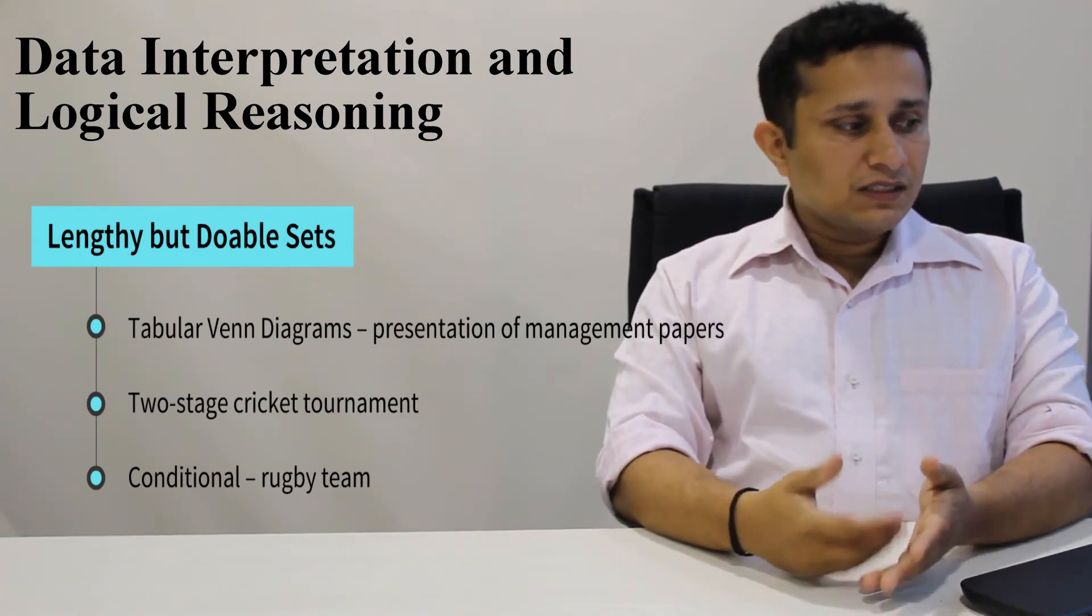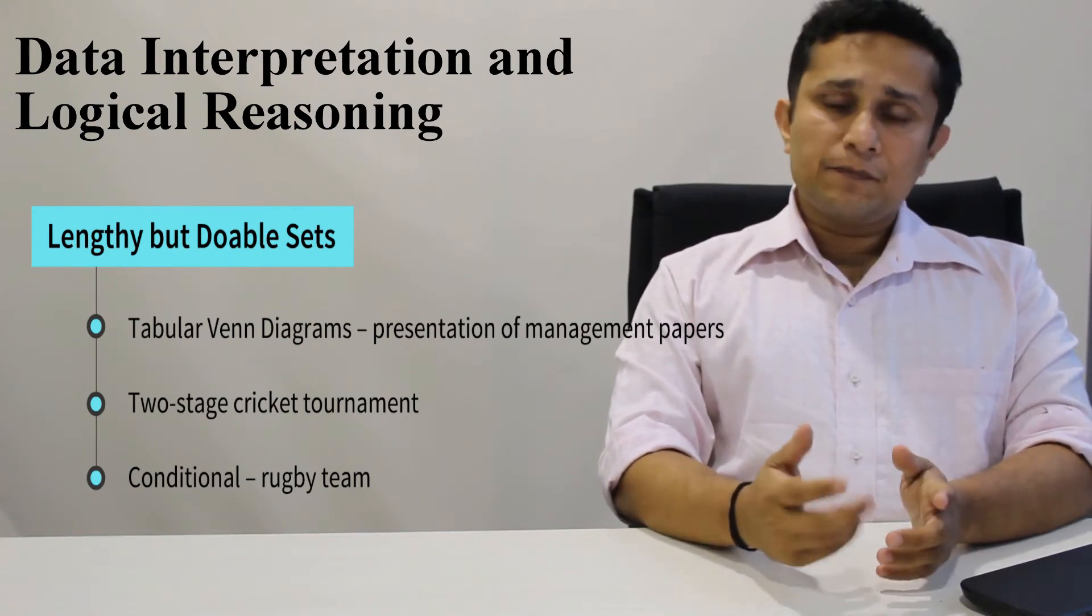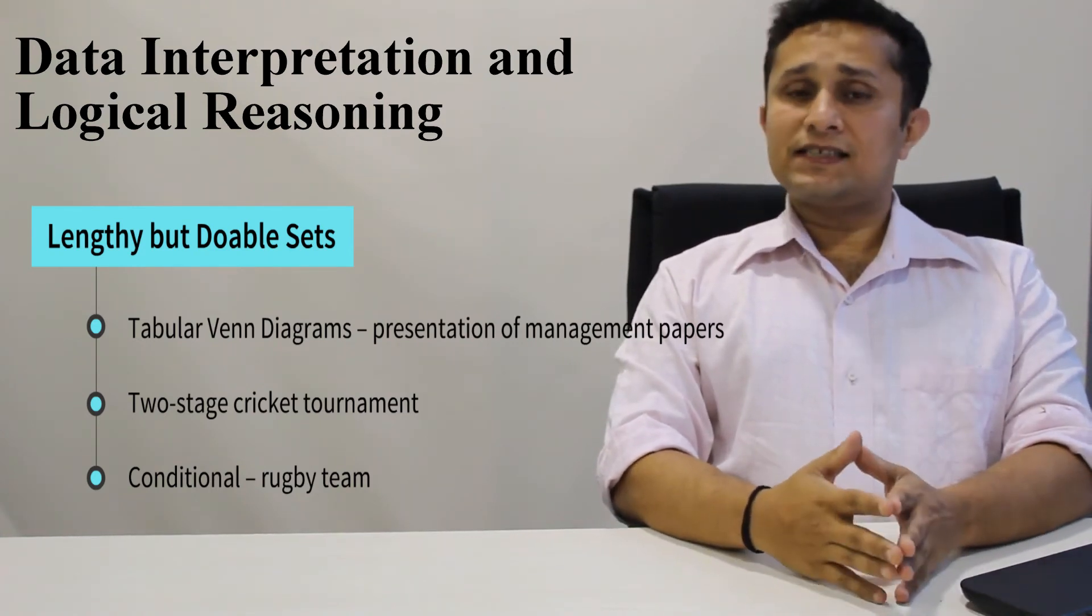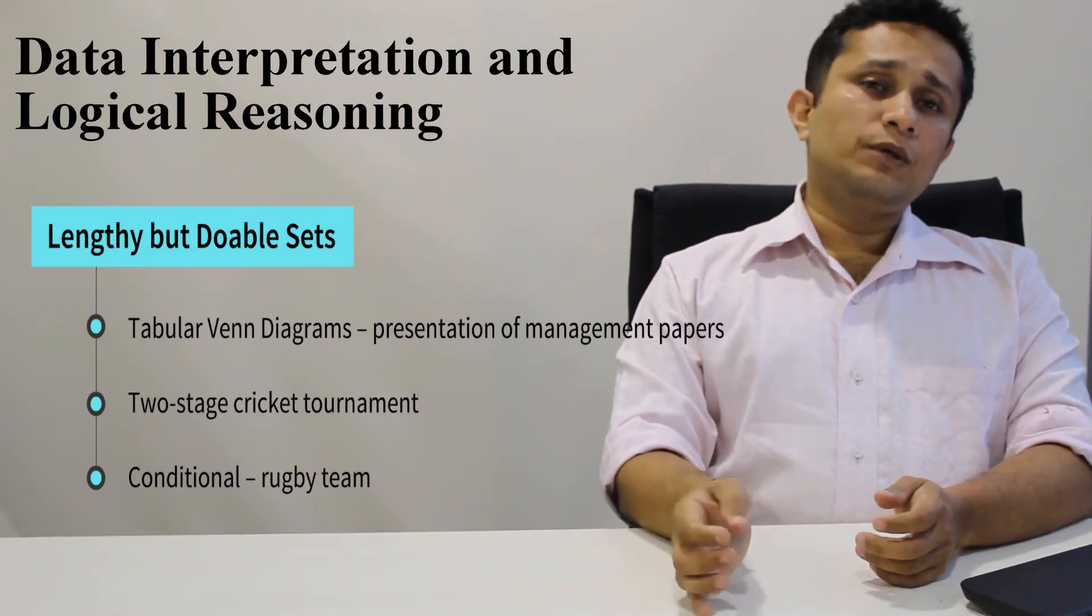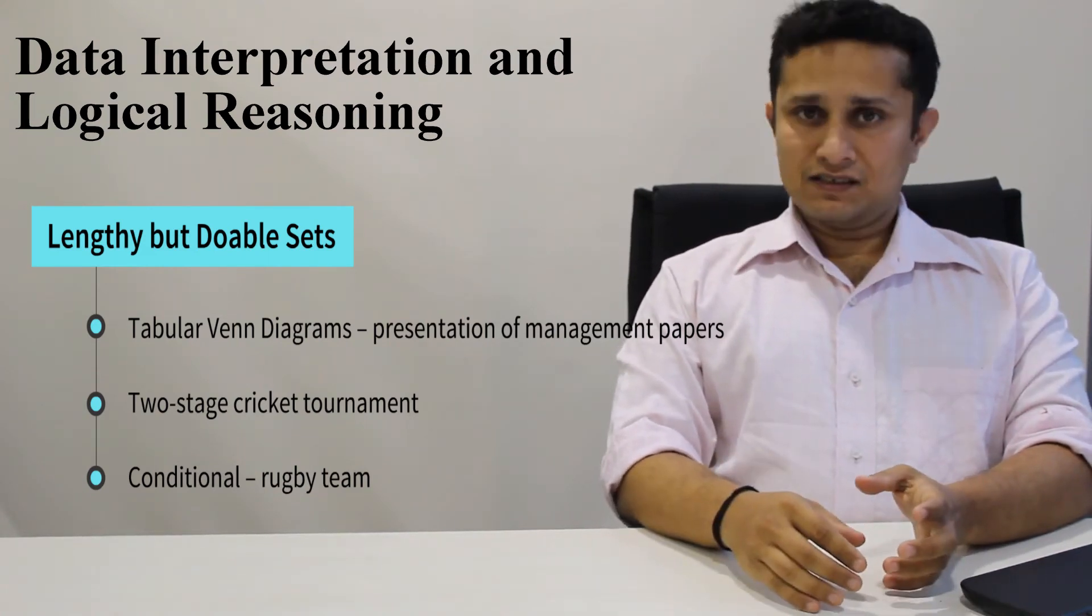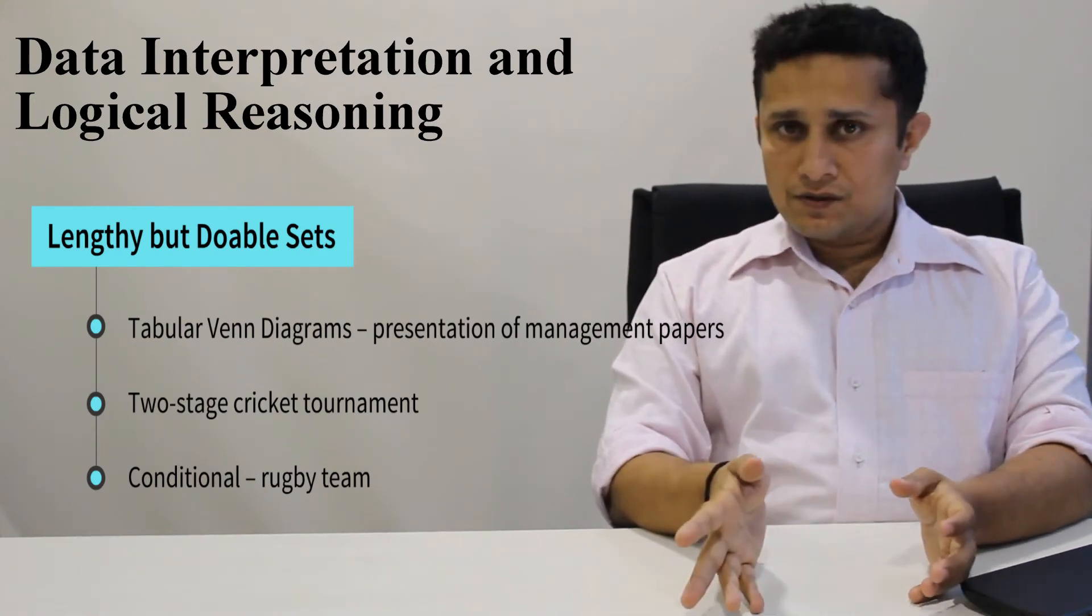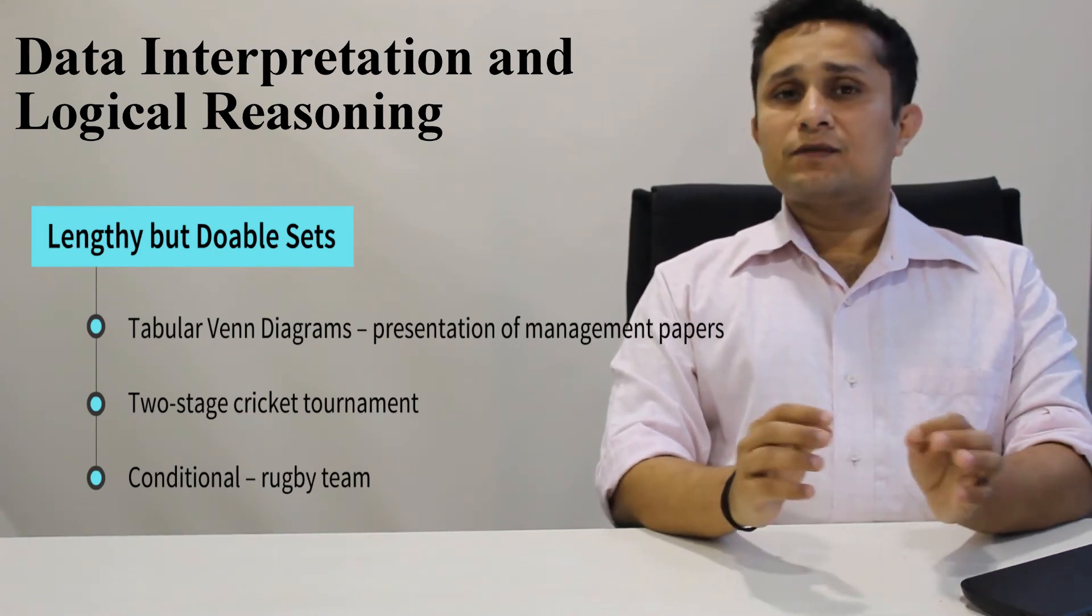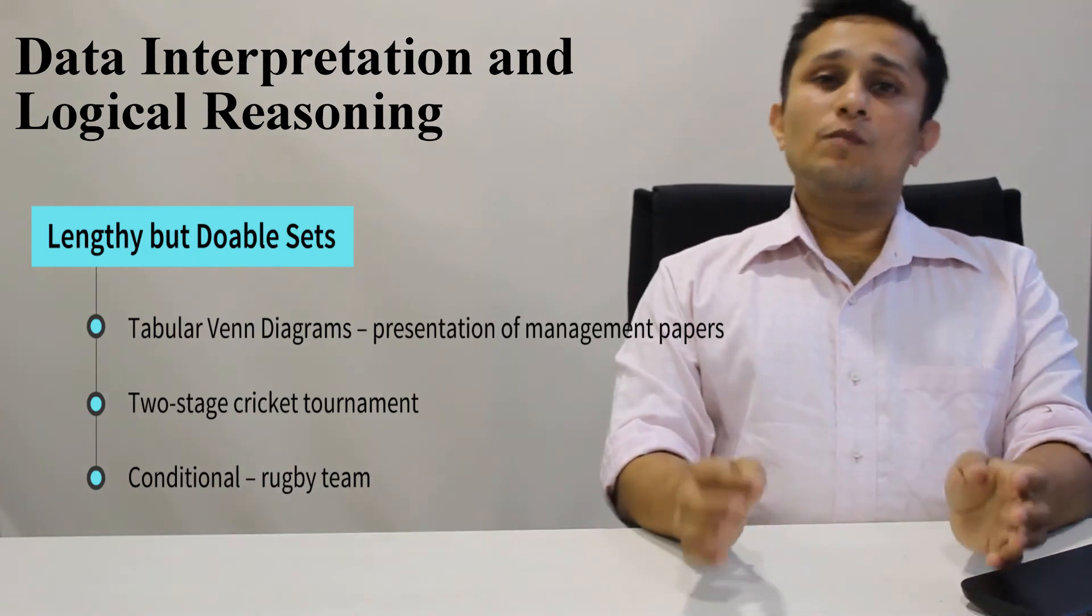There was one set which looked very tricky. It was on presentation of management papers in a college. Essentially it was a Venn diagram based set. To be very honest, when you look at the solution of this set, you will realize that it was a very easy set. But it looked very complicated because it was a caselet with a longish table. Broadly it was a pure Venn diagram set theory based set. Had you done it, you would have got full marks for it.